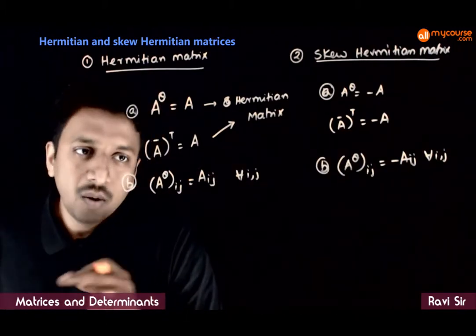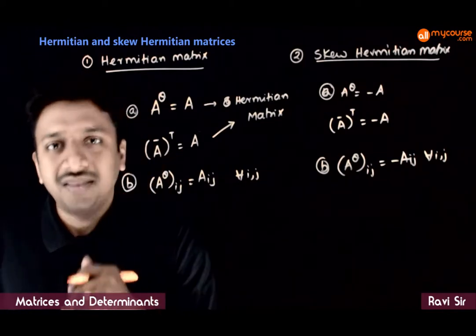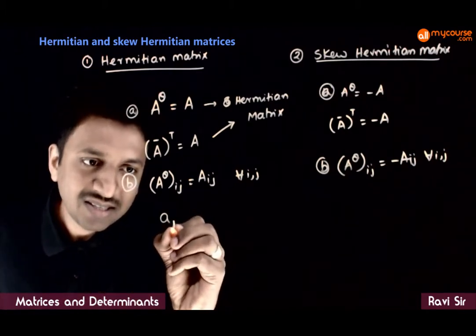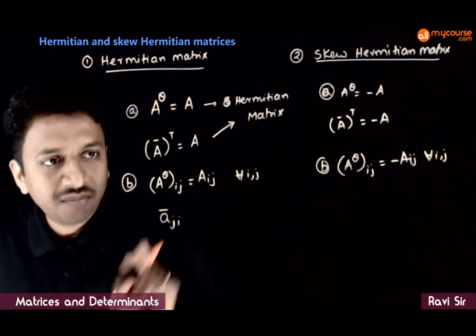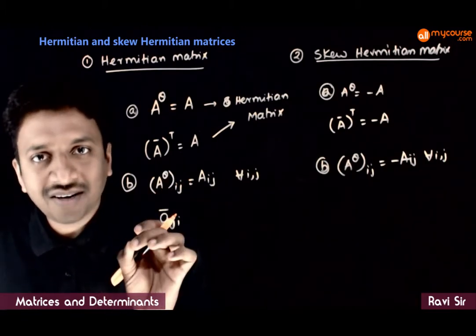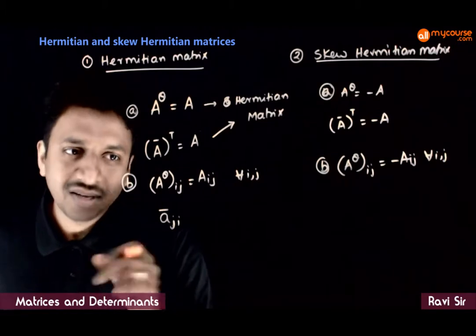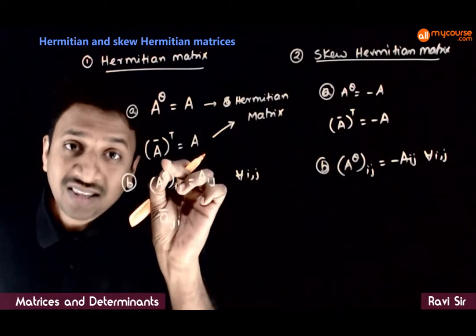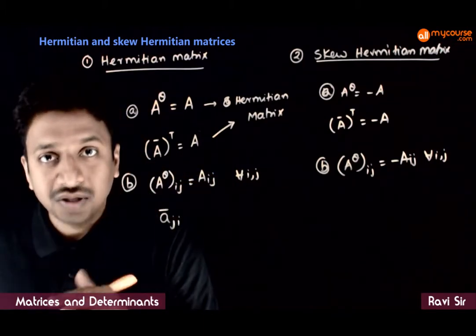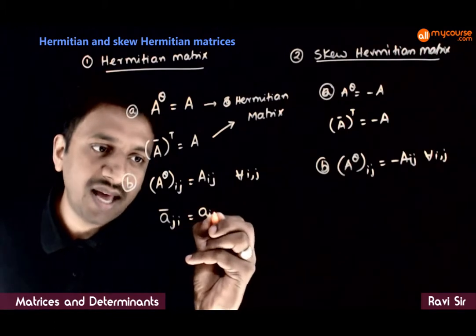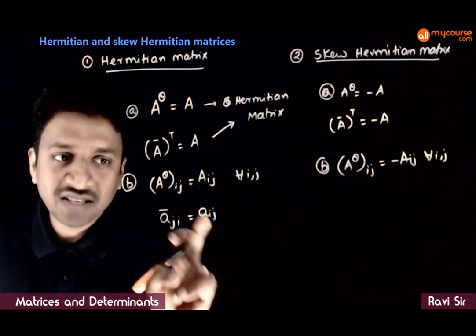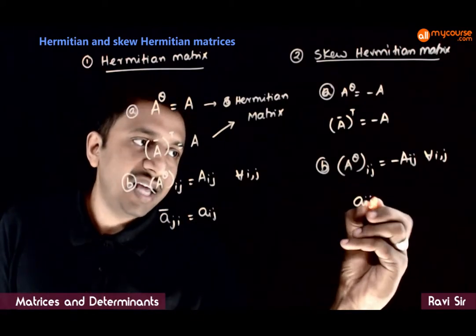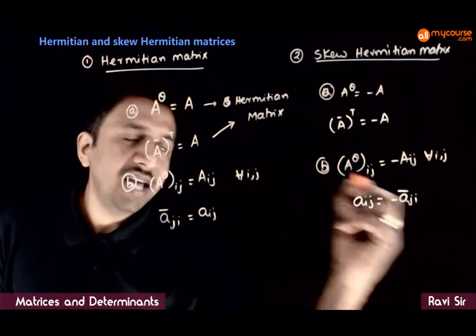If you closely look at this: the (i,j)th element of A^θ is nothing but the conjugate of A_ji, because theta means we transpose the matrix and then take the conjugate. So A^T_ij = A_ji, meaning A^θ_ij = conjugate(A_ji) = A_ij. So every A_ij has to equal conjugate(A_ji). For skew Hermitian, A_ij has to equal minus of conjugate(A_ji).